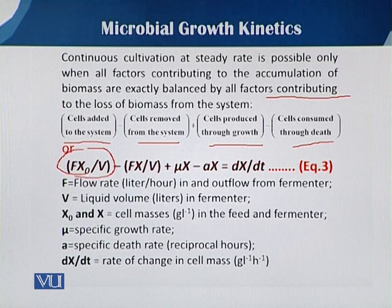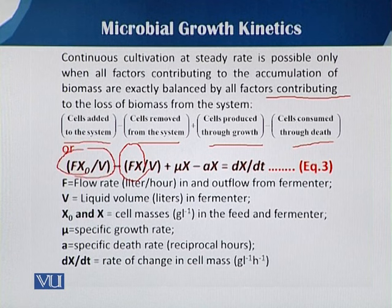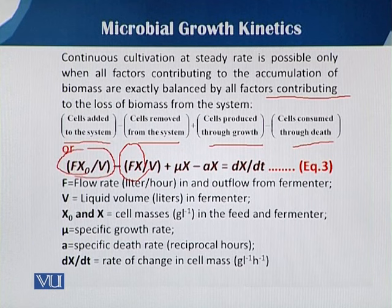Then there is the term f·x, where f is the flow rate and x is the biomass concentration when the system is running. V is again the volume. Then there is μ·x, where μ·x is what we call dx/dt — the change in biomass concentration with respect to time.